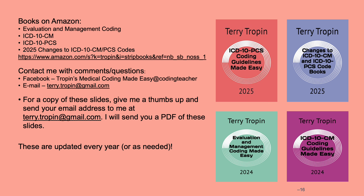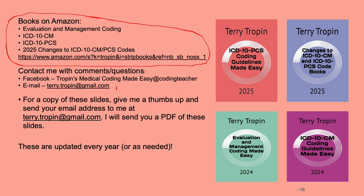That covers all the changes in the guidelines. I will also put up the tabular list, which is more extensive. These books are available on Amazon. If you have comments or questions, contact me at my email. If you'd like a copy of these slides, give a thumbs up and send your email address. Remember, my books are updated every year — the 2025 editions are already up, and the CPT codes book will be updated sometime this fall. Thank you very much, I hope this was helpful.